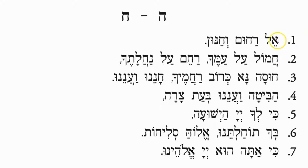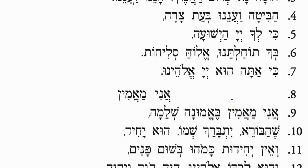Number one: El Rachum V'chanun — God, a merciful and gracious God. To hamol al amecha — have pity, have mercy on your portion, on your inheritance. Chusatna, karov rachamecha, chanenu v'anenu. Habita v'anenu — look at us, gaze at us. V'anenu — and answer us.